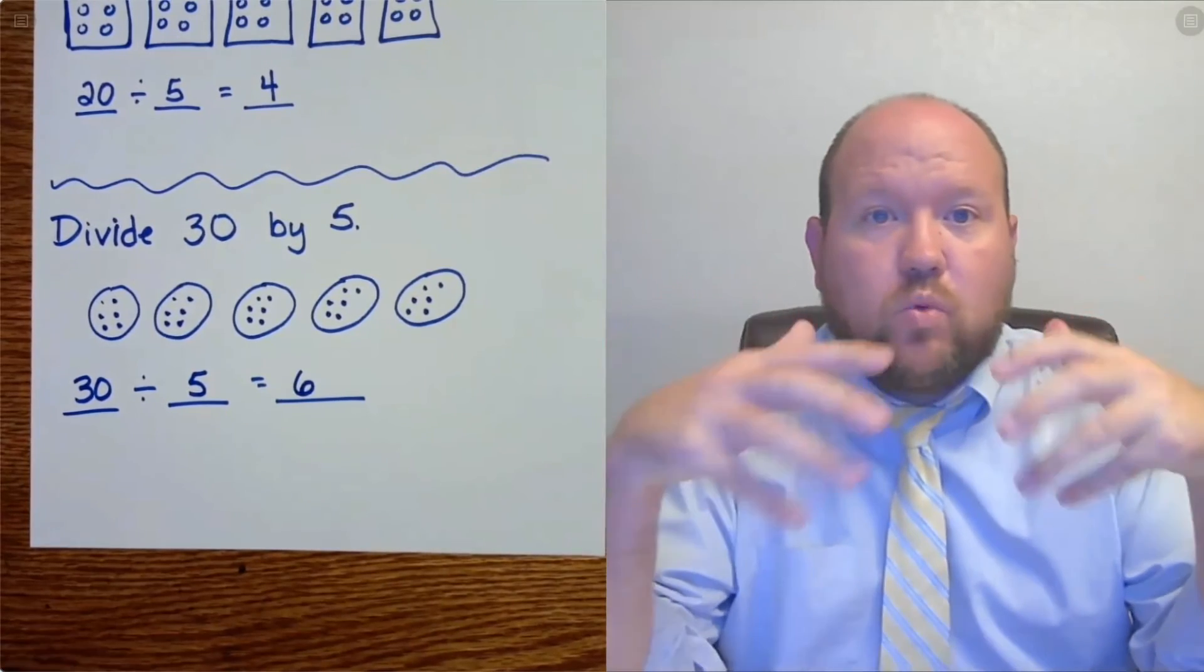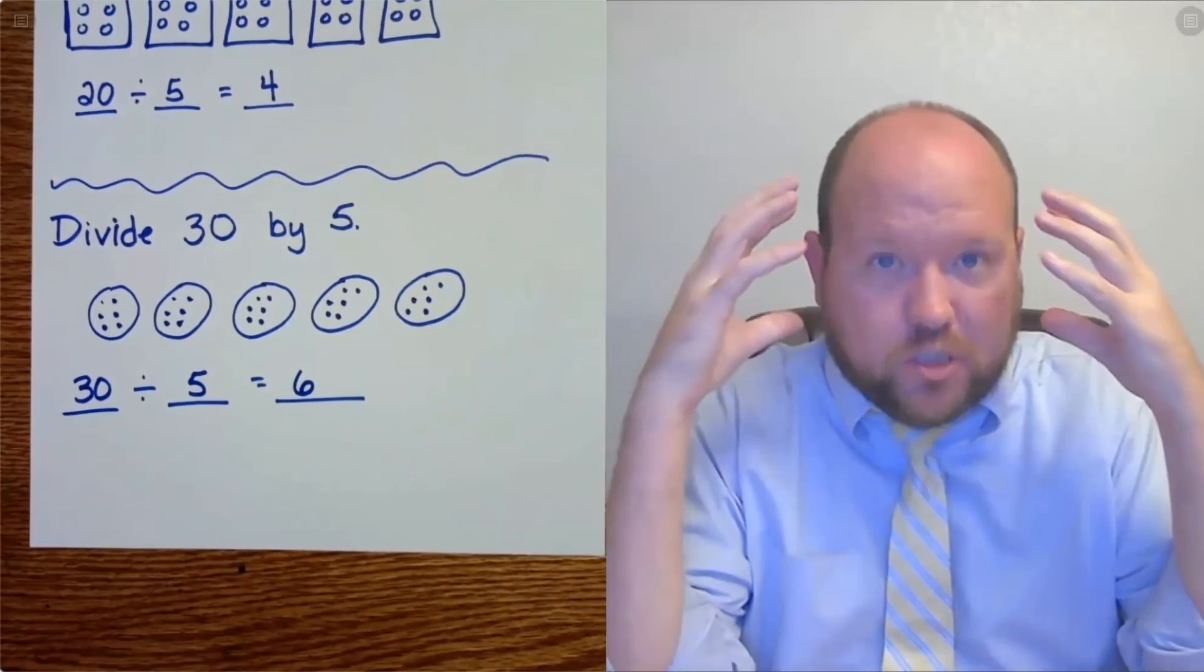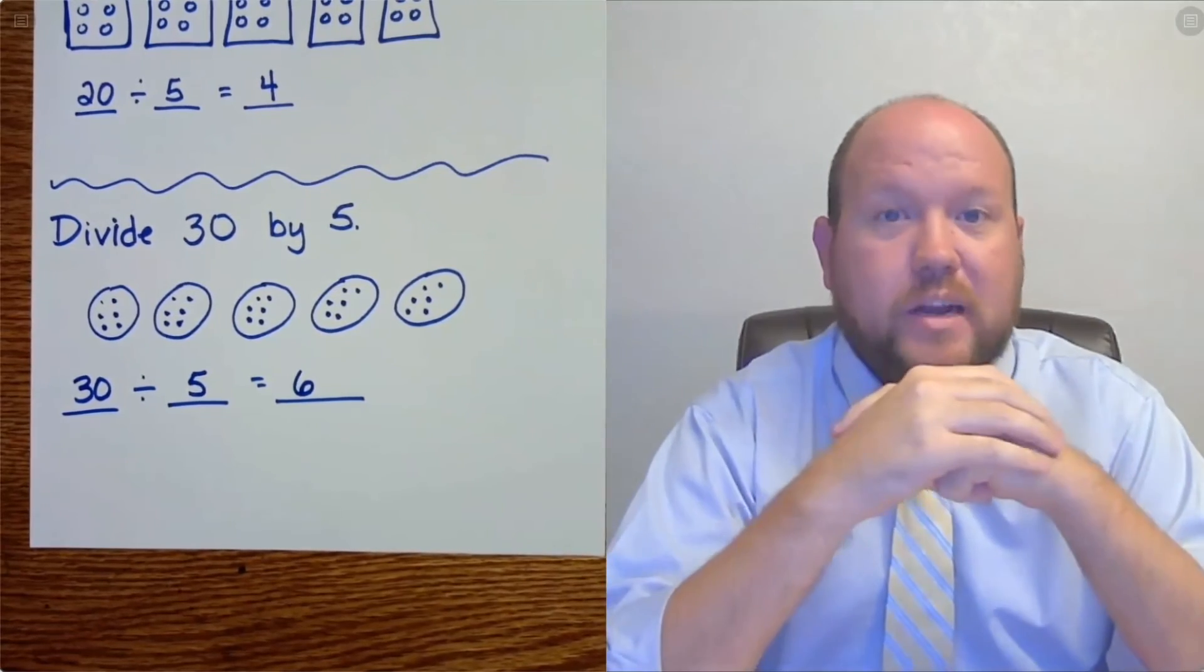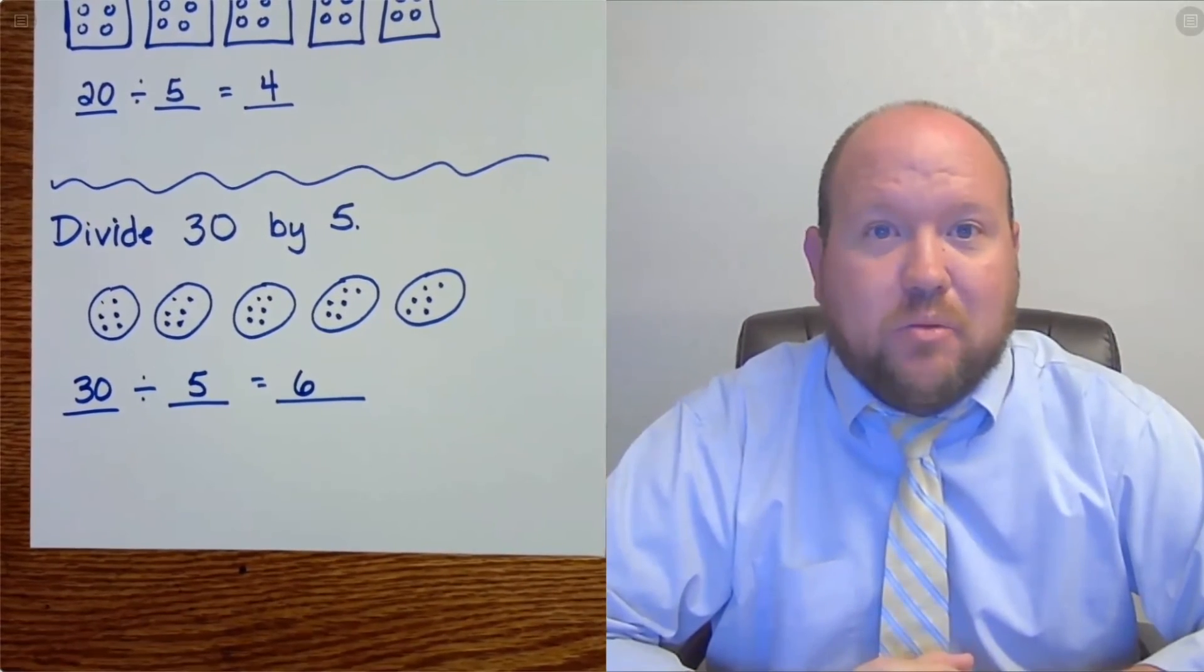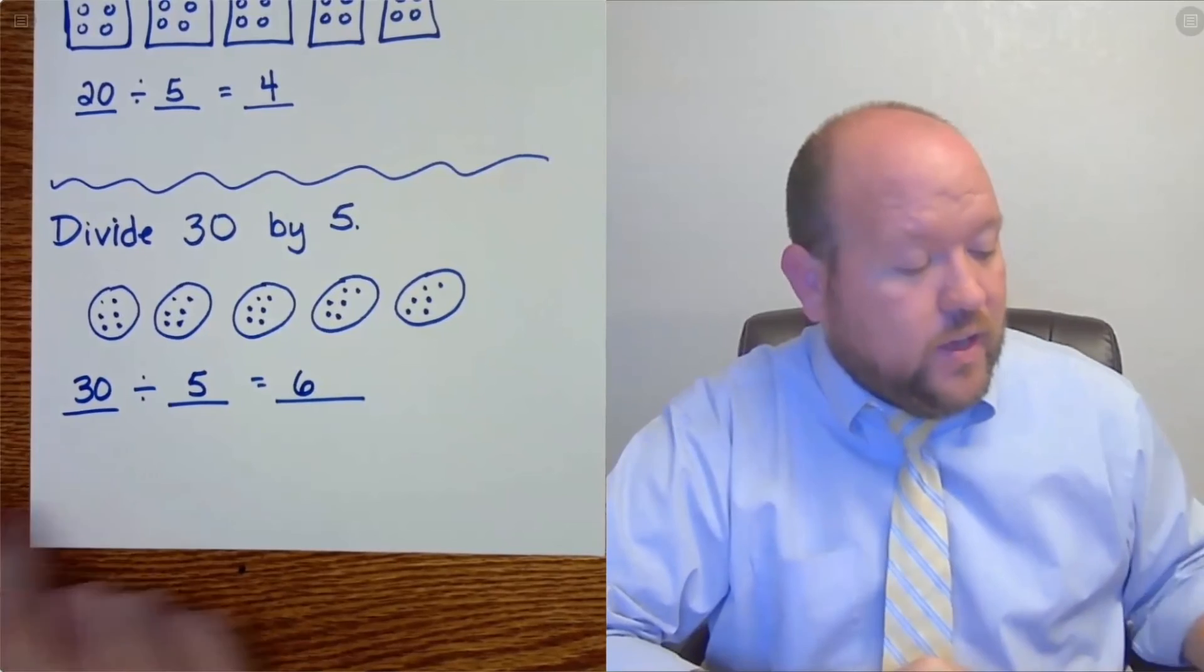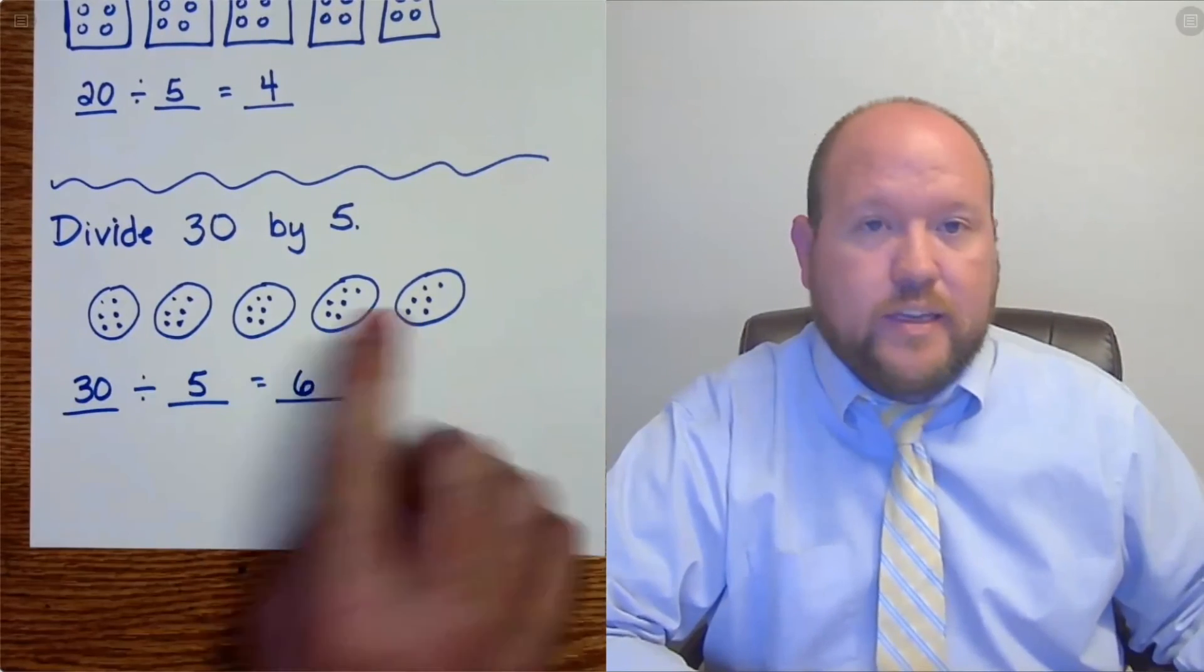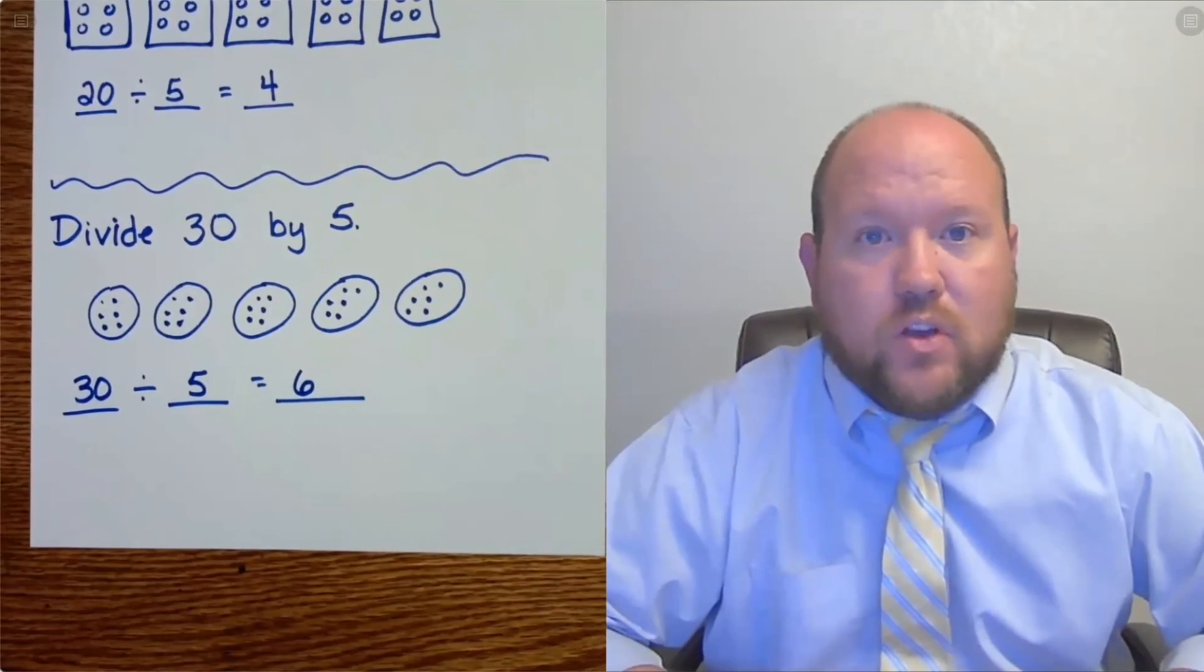Again, we want to move towards those numbers just being stored in our head and we're able just to think about them and know them. But until we get there, we need to be able to solve. So skip counting by counting on your fingers or using circles like this, those are ways that can help you solve until you get there.